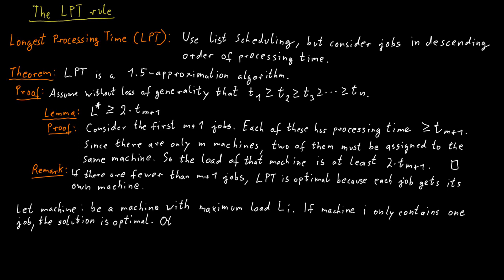Otherwise, that machine contains at least two jobs. And it's important to note that the second job that is assigned to that machine cannot be one of the first m jobs in the sequence, because the first m jobs in the sequence are assigned to individual machines. We only start to place a second job on a machine once each machine contains at least one job.